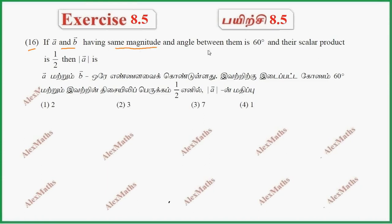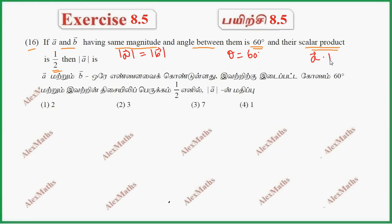Part B: vectors A and B having the same magnitude, and the angle between them is θ. The scalar product is half. So same magnitude: mod A vector equal to mod B vector. The scalar product A dot B equals half.